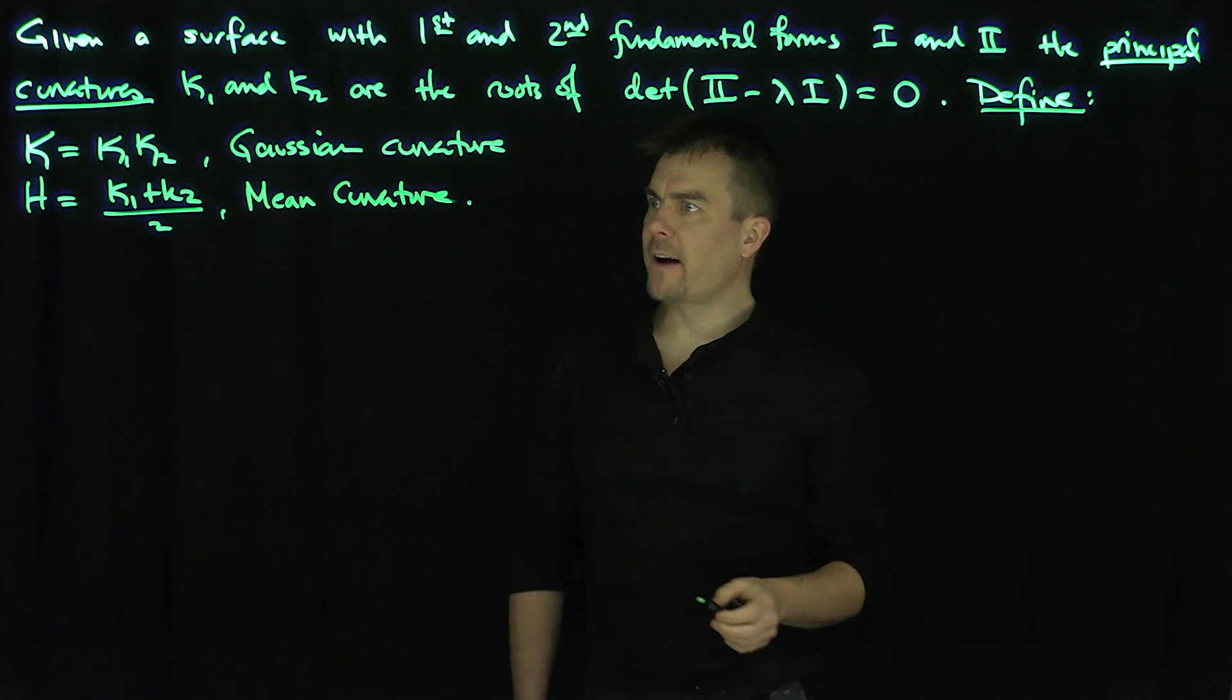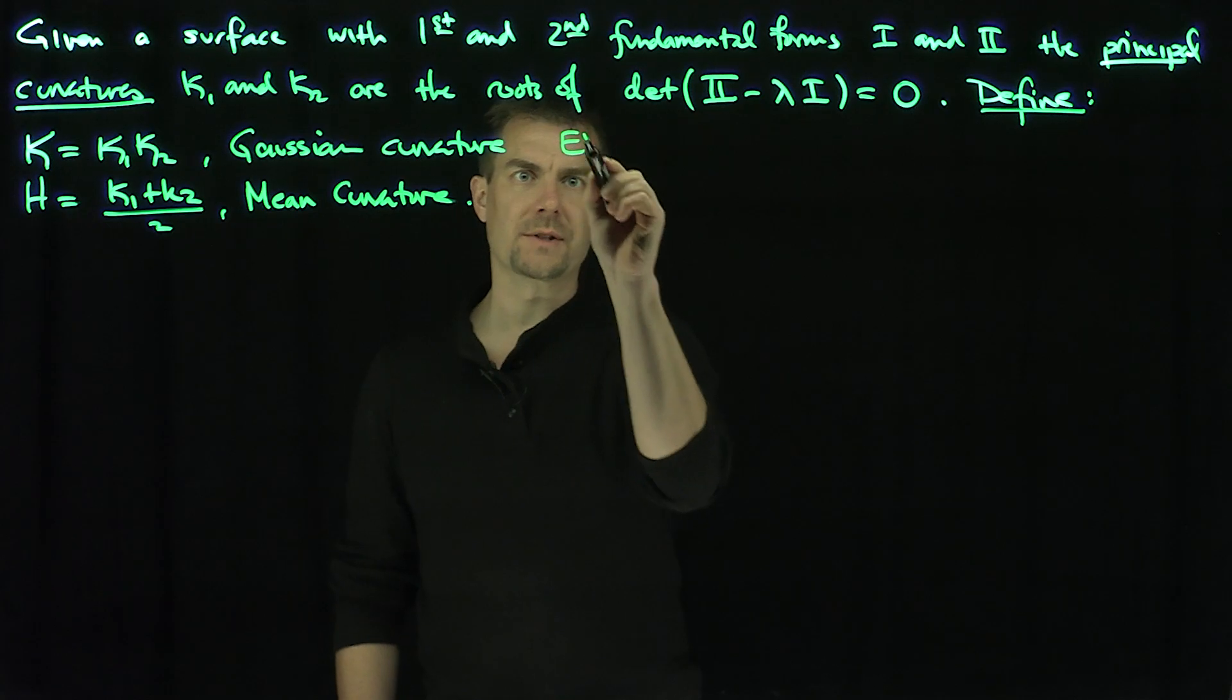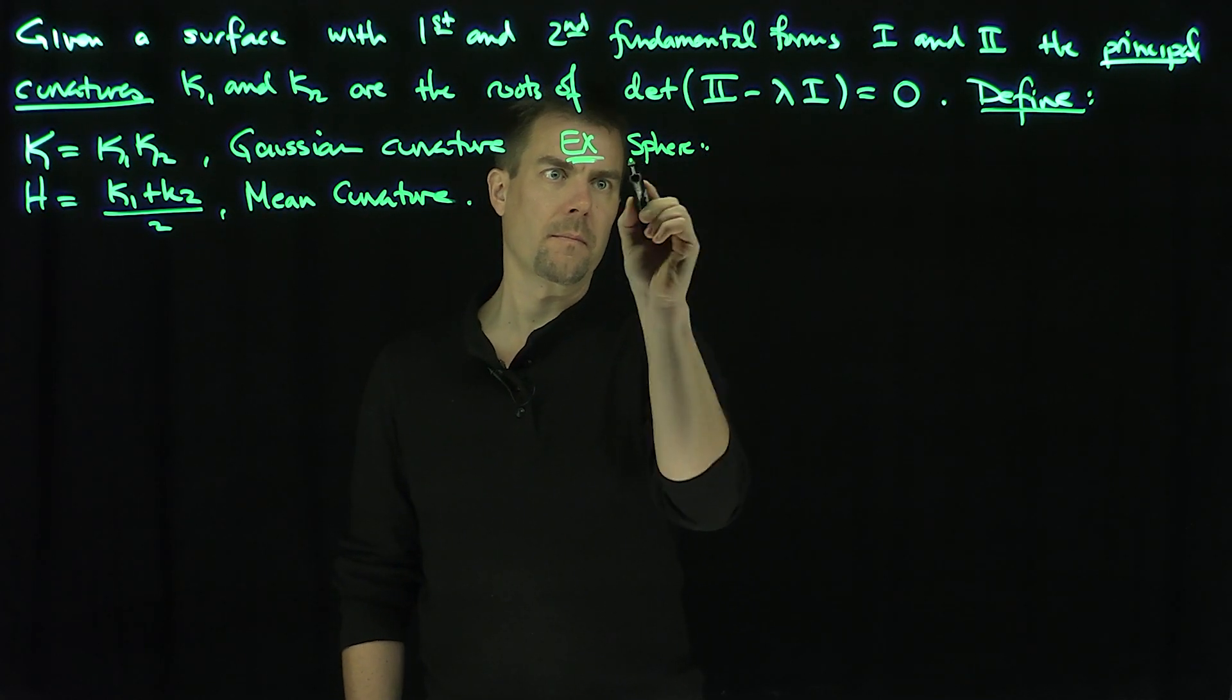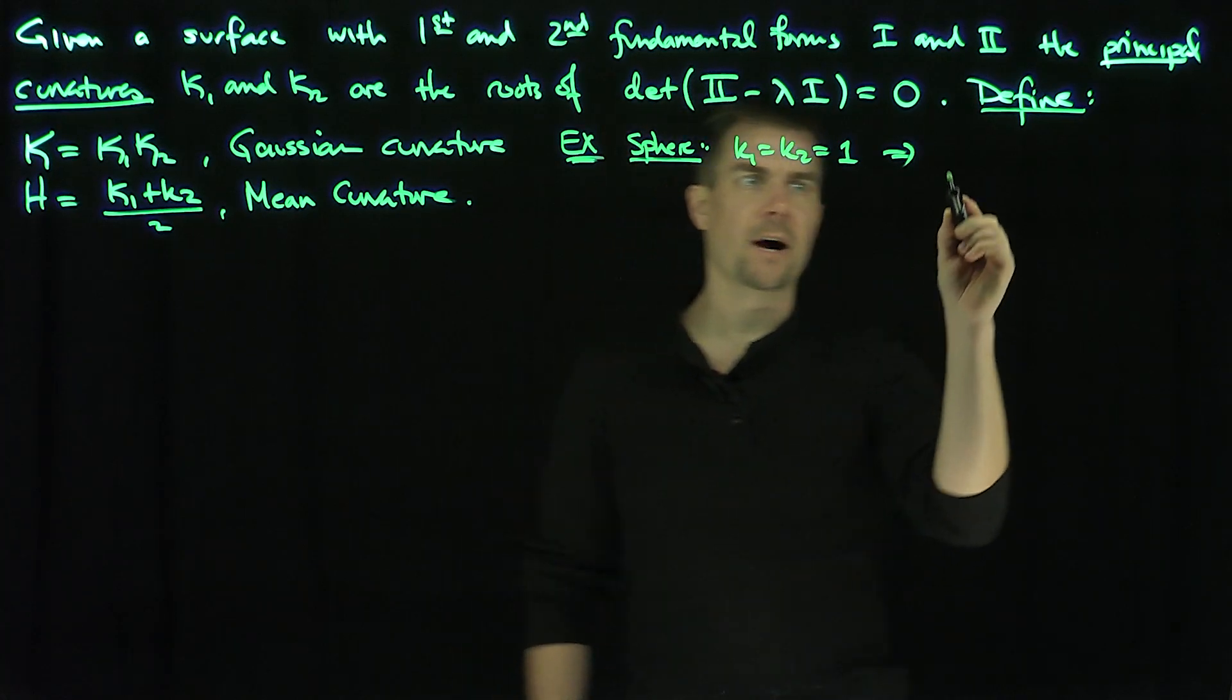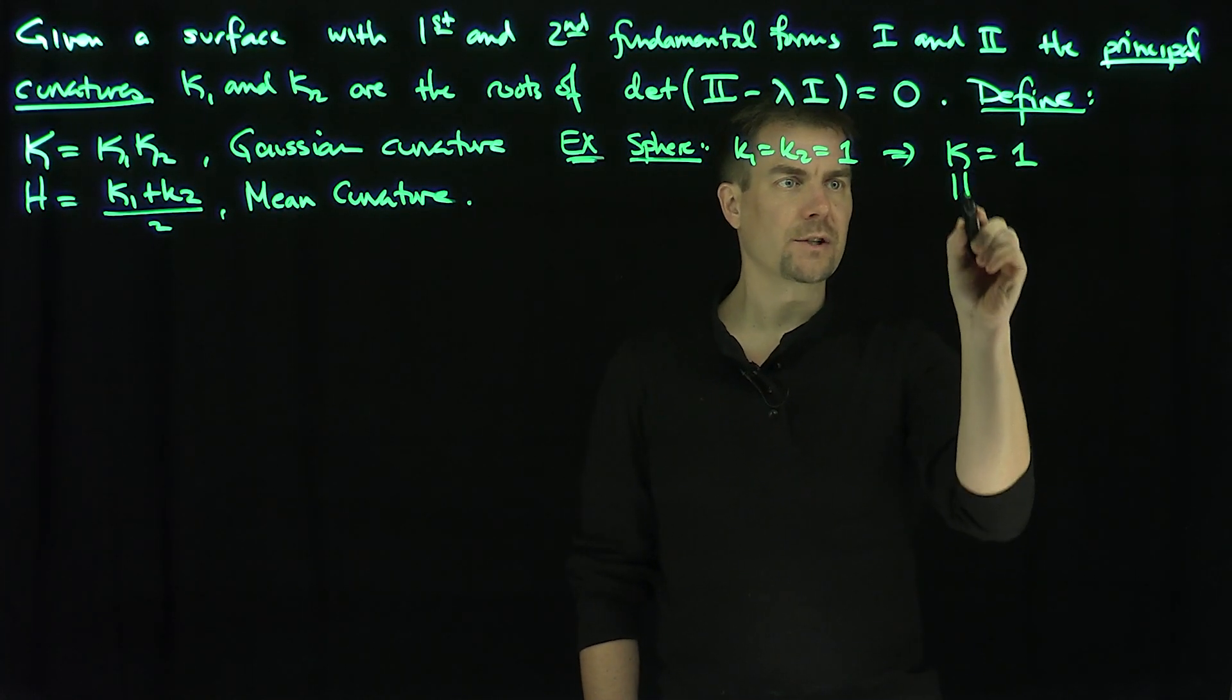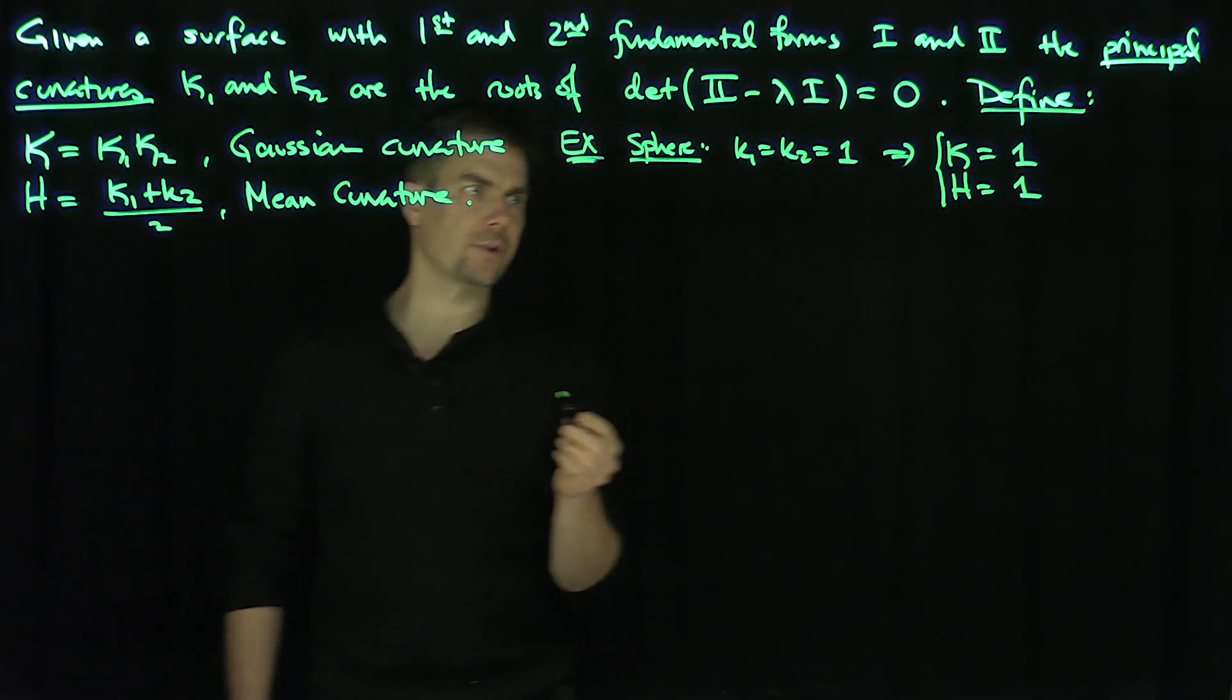So for example, we know that for a sphere, examples of these things. We previously saw for a sphere we saw that kappa 1 equals kappa 2 equals 1. And so that implies that the Gaussian curvature of a sphere is equal to 1. And it implies the mean curvature of a sphere is also equal to 1. So for a sphere, the Gaussian mean curvatures are the same.